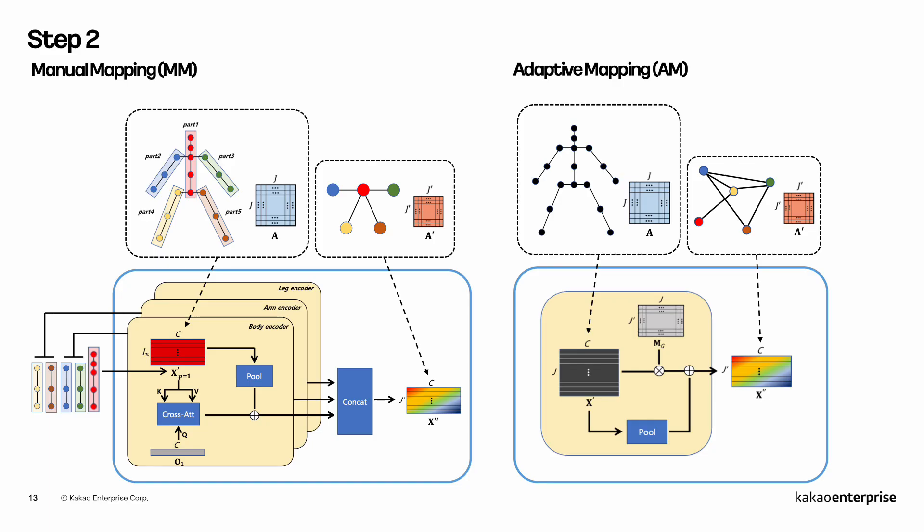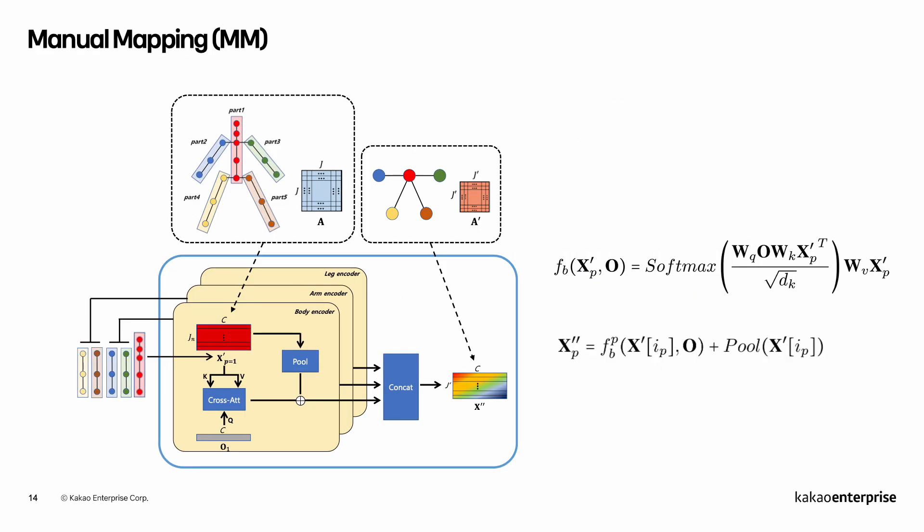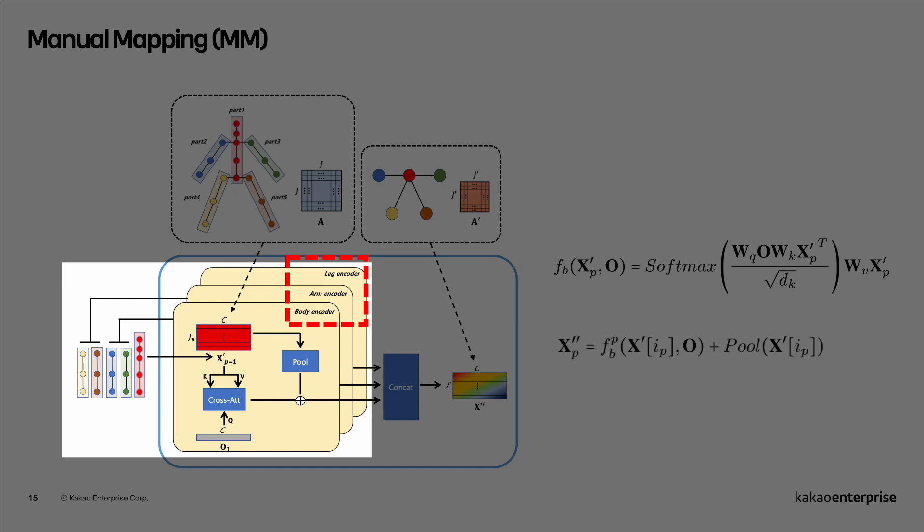We introduce two types of joint mapping modules. MM module consists of three cross-attention blocks, namely arm, leg, and body encoders. Each encoder processes corresponding joints to yield a single node feature.